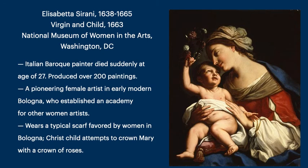This image is probably not so well known. It's by Elisabetta Sirani, in the National Museum of Women in the Arts. She was an Italian Baroque painter who died suddenly at the age of 27, but even at that young age she had already produced over 200 paintings. She was the pioneering female artist in early Bologna and had established an academy for other women artists. Here we see the baby Jesus playing with a crown of roses, attempting to put the crown on Mary's head.